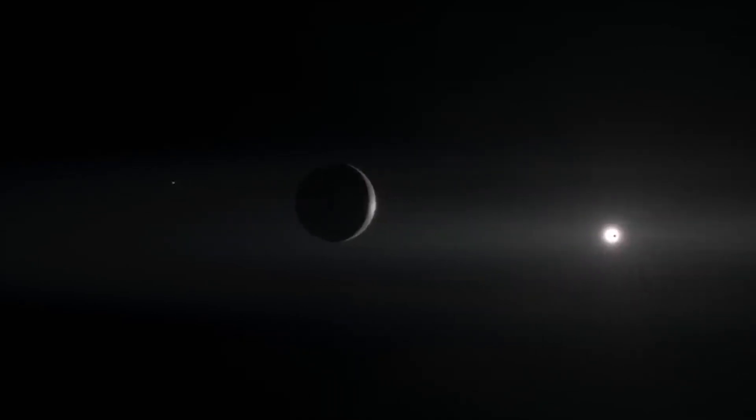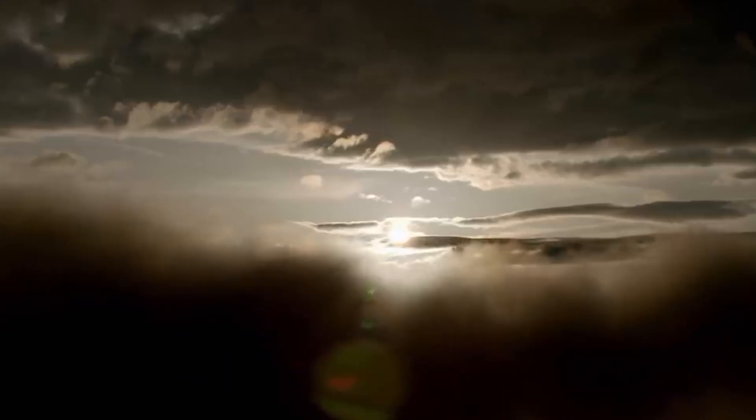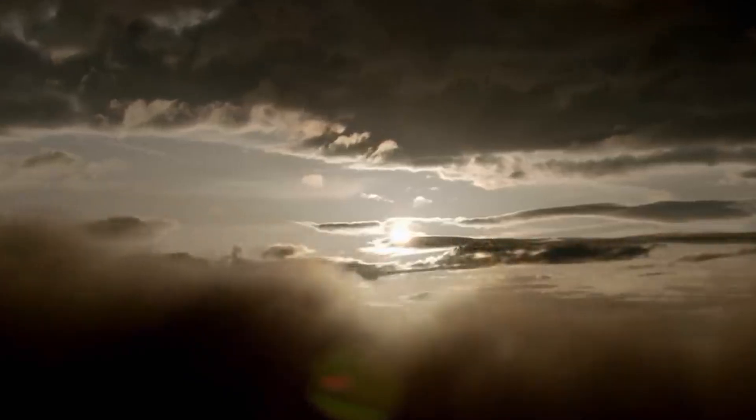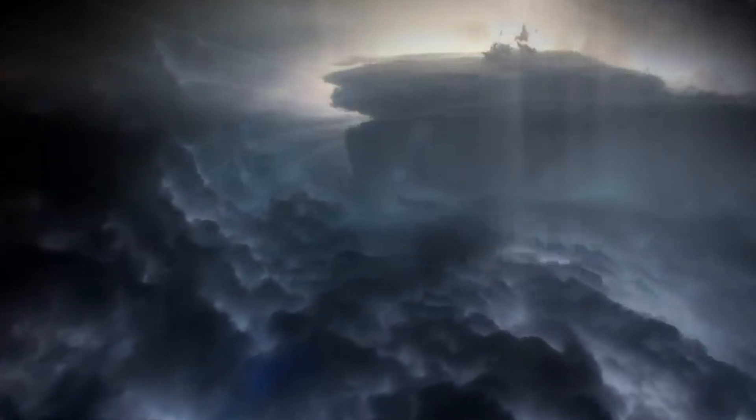Scientists expected it to disappear completely, but instead, the storm reversed course and moved back north. To add to the mystery, smaller vortices have sometimes been observed splitting off from larger storms. These smaller patches of turbulence may represent part of the natural life cycle of Neptune's storms.